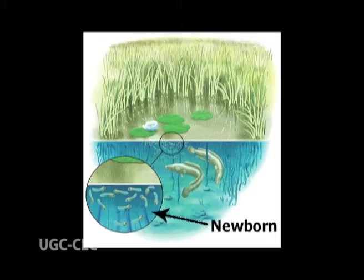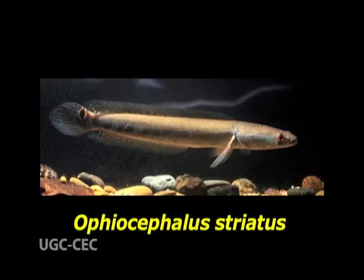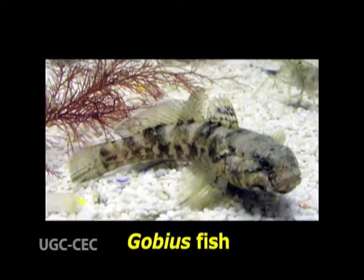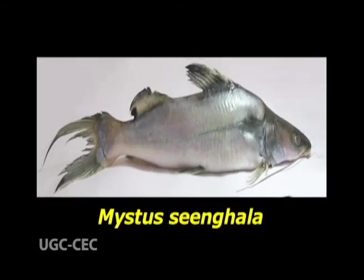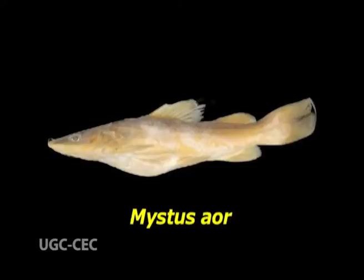Afterwards, the young fish swim with the male for some time. Ophiocephalus striatus builds a nest of weeds and both parents take care of the eggs. Gobies, instead of making nests, lay eggs in the empty shells of bivalves and the male guards them. A nest of more or less circular depression excavated by a fish, measuring about 18 inches in diameter and six inches in depth at the center, is built, and eggs are laid by the female in the nest.